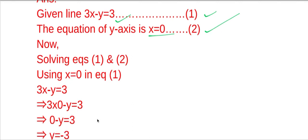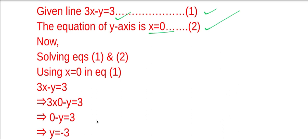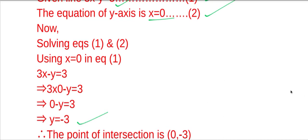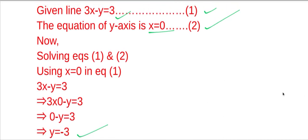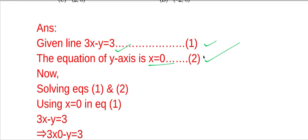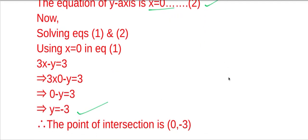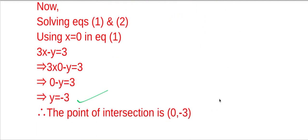So 3 into 0 is 0 minus y equal to 3. Therefore y is equal to minus 3. So the point of intersection of these two lines is 0, minus 3.